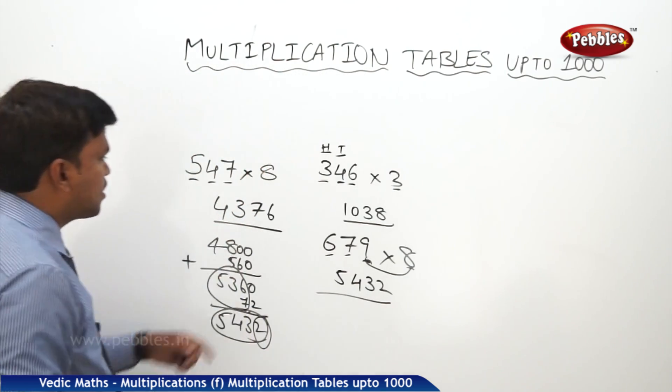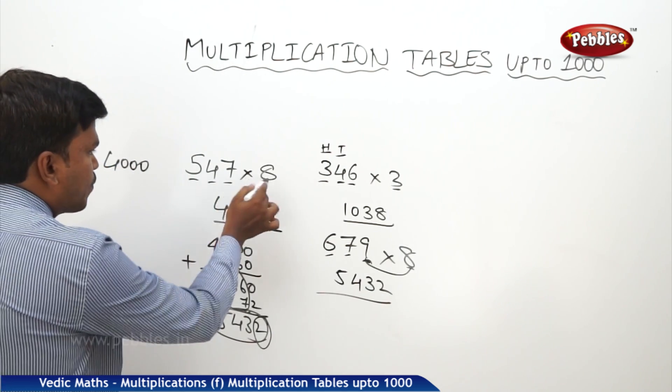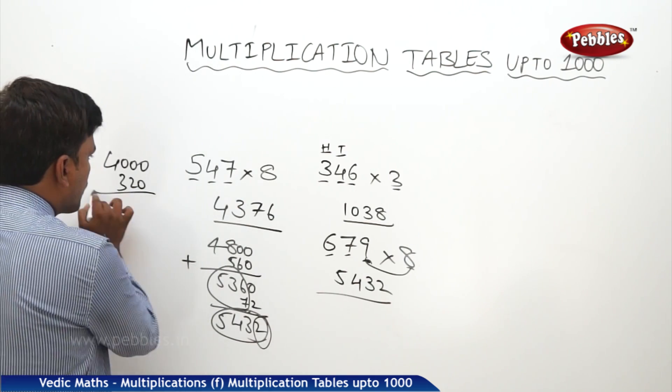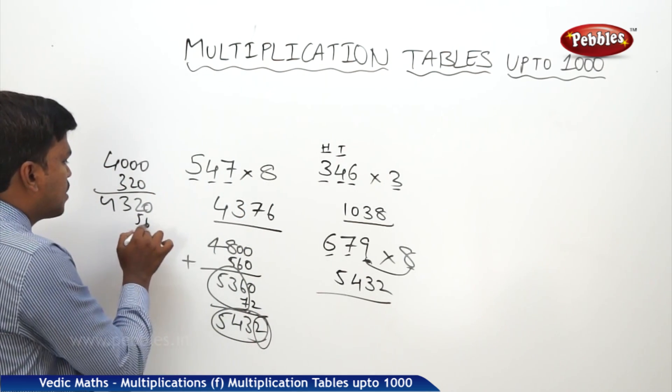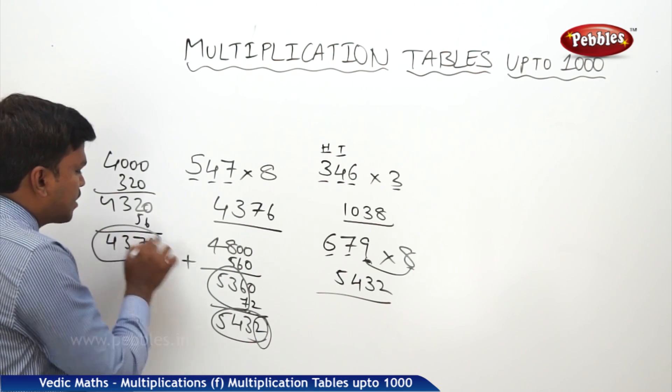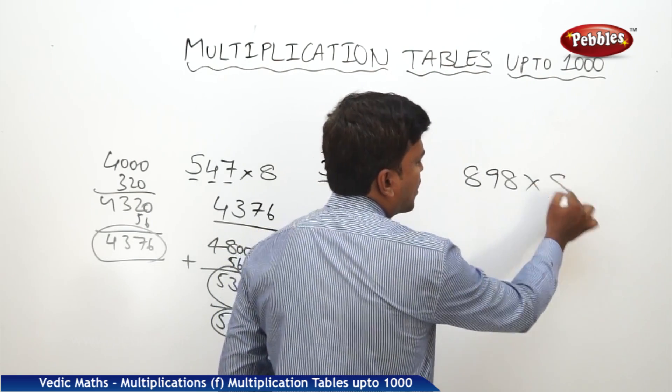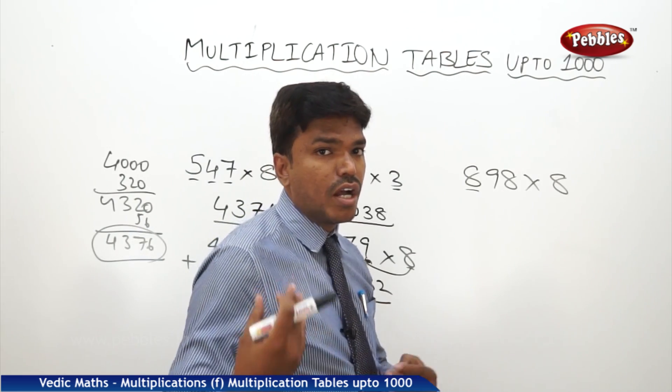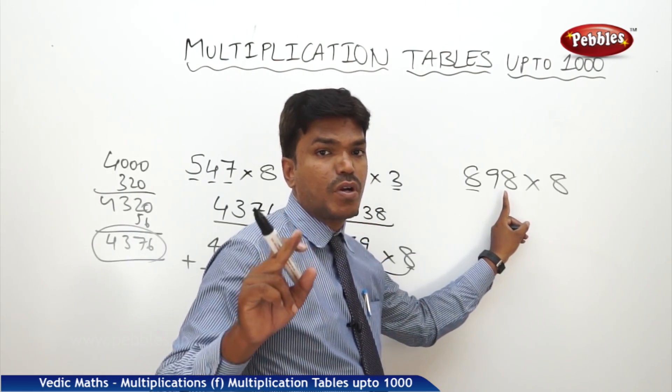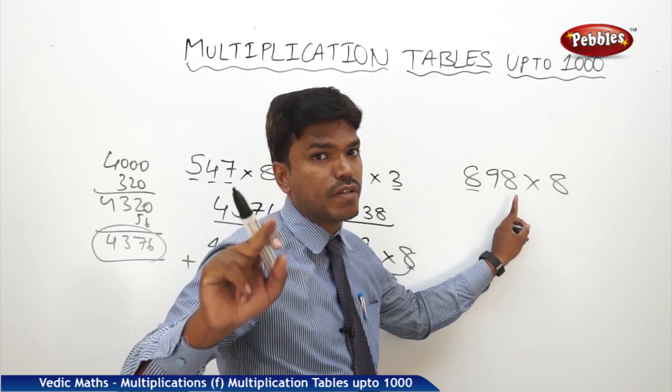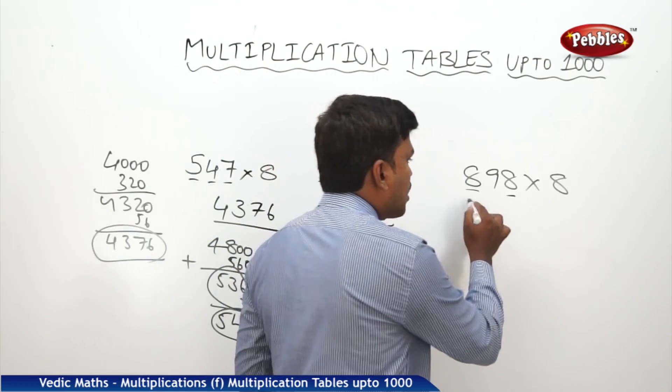Even this one also I did the same way. 547 into 8, so 8 fives 40, take it as 4100. 8 fours 32, take it as 320. How much you will get? 4320. First add two numbers, then go for the third one. Now what is 8 sevens? 56. So what is the answer? 4376. Like this you need to calculate in the mind. Even similarly, say some big number 898 into 8 times. Come with me, say along with me. 6400 plus 720. 6400 plus 720, 7120. 7120 plus 64, 7184.